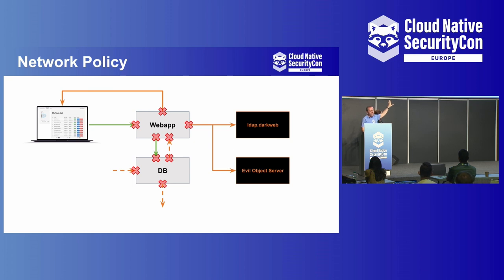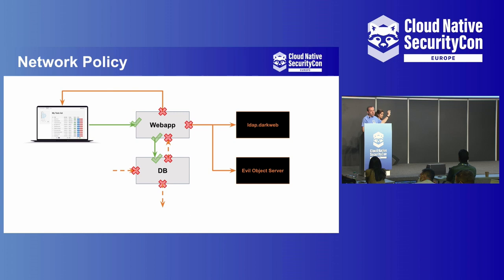I'm a fan of the deny-all style pattern where you start with nothing working — everything is broken, no ingress or egress from the pods is allowed. You want to allow DNS so you have service discovery, but beyond that nothing is allowed. Then you explicitly add only the rules you need for your application to work: traffic comes in from users, traffic leaves the web app towards the database, and traffic into the database only from the web app.